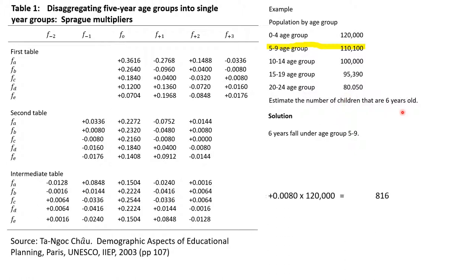From the Sprague table, we need to locate age six. Remember that the table accounts for individual ages: age zero, one, two, three, four, five, six — so age six is in the second sub-table, labeled 'b'. Since 5 to 9 is the group under consideration, we need to consider the preceding group 0 to 4 and the following groups 10 to 14 and 15 to 19.